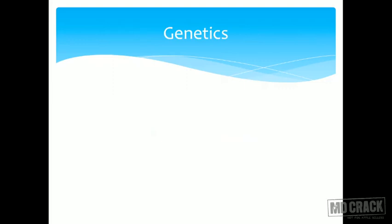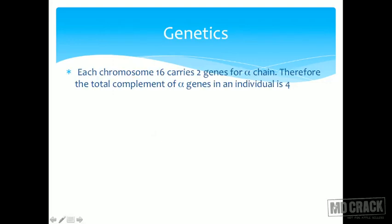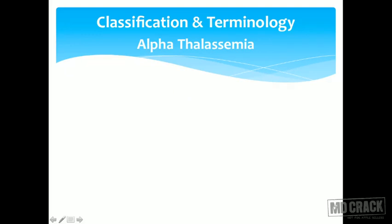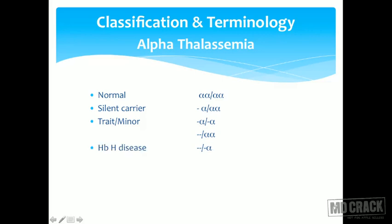In alpha thalassemia, each chromosome 16 carries two genes for the alpha chain, giving a total of four genes per individual. The normal genotype is alpha-alpha/alpha-alpha. A silent carrier has one gene deleted; a trait or minor has two genes deleted (either from the same or different chromosomes); HbH disease results from three gene deletions; and Bart's hydrops fetalis occurs when all four alpha genes are deleted.